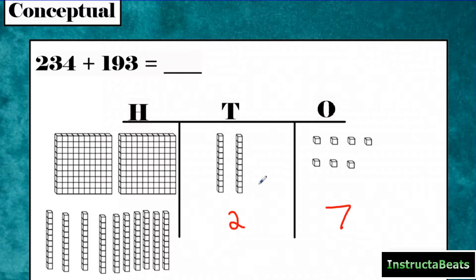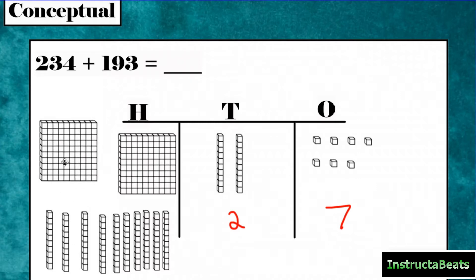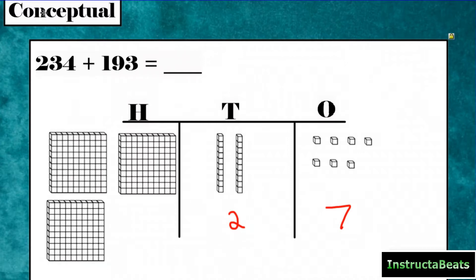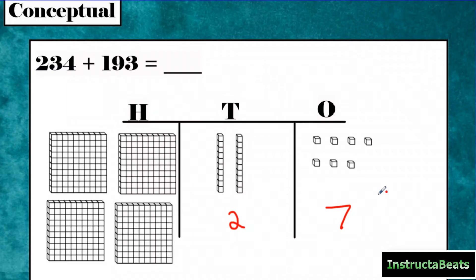10 10s is really a 100 — 10, 20, 30, 40, 50, 60, 70, 80, 90, 100. So I put them together and trade them for another 100 block. Now I have 3 in the 100s place. Then I still need to add another 100 from my 193. When I do that, I have 4 100s. So my answer to this question is 427.